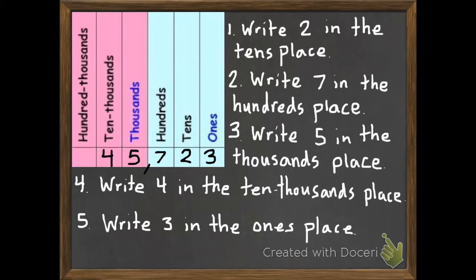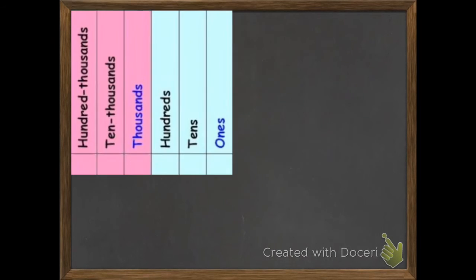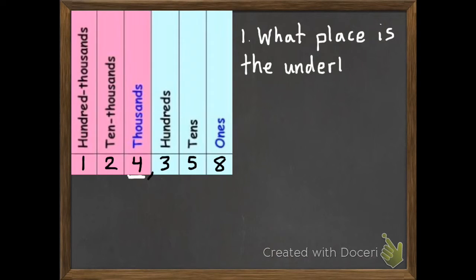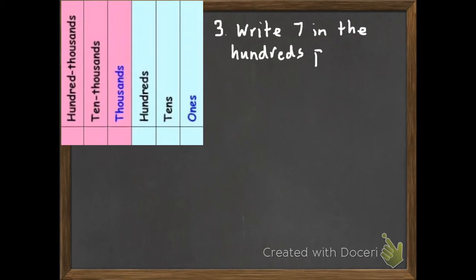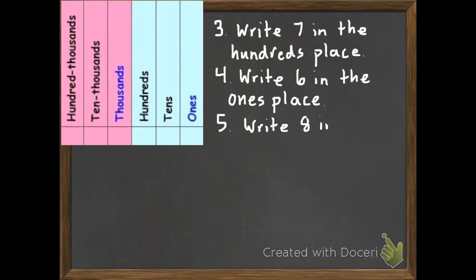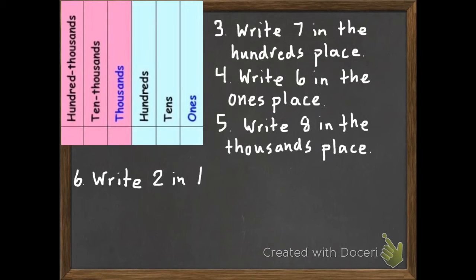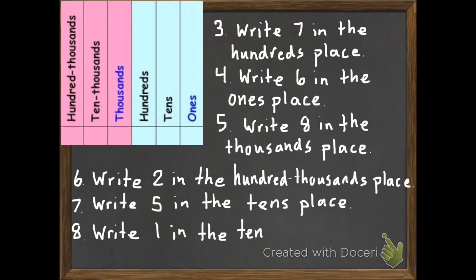These next problems you're going to bring to class tomorrow, and we will check and talk about them there. Question number one: What place is the underlined digit in? And then write its value. You may need to pause this again. Then when you're done, move on to the next problem. Problem number three: Write a seven in the hundreds place. Four: Write six in the ones place. Five: Write eight in the thousands place. Six: Write two in the hundred thousands place. Seven: Write five in the tens place. And your last part of the day is to write one in the ten thousands place.